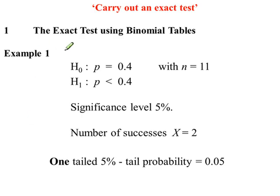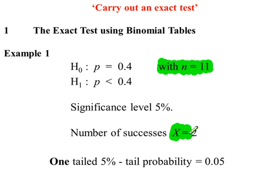Example 1: we have 11 trials, or 11 values in our sample, and from those 11 there are two successes. So we're going to work out the probability based on this value here, the 2.